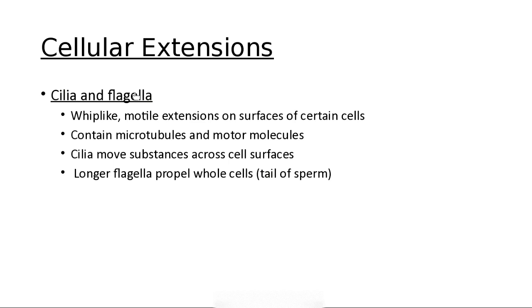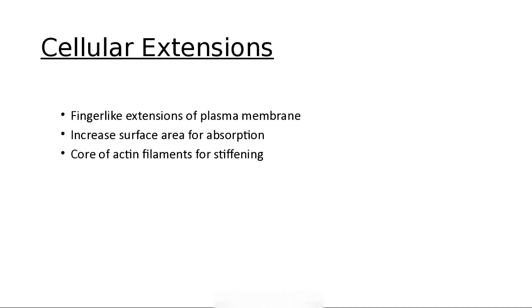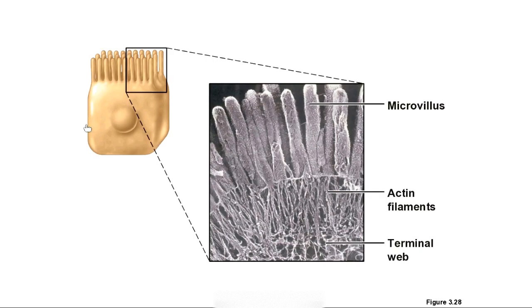Cilia are short cellular appendages, such as in your trachea, which move stuff out of your trachea so it won't get in your lungs. The only flagellated cell in the human body is the sperm. Cilia are short; flagella are long. Other cellular extensions include villi and microvilli — a cell has villi, and on top of that microvilli, which create a great surface area for absorption.